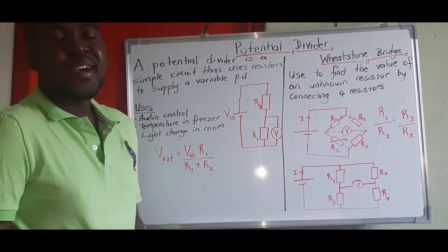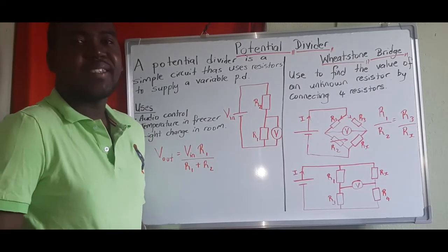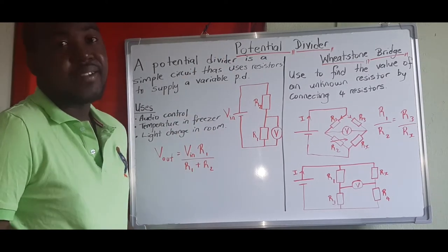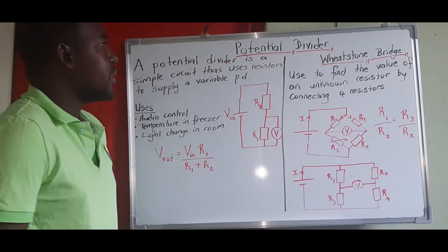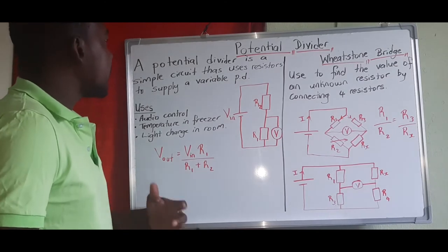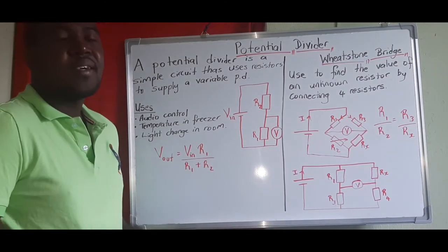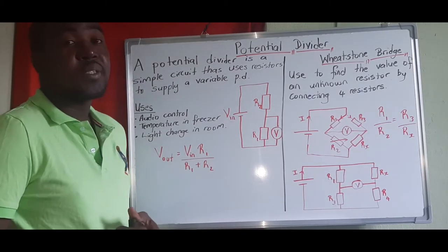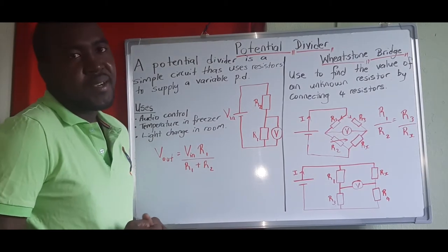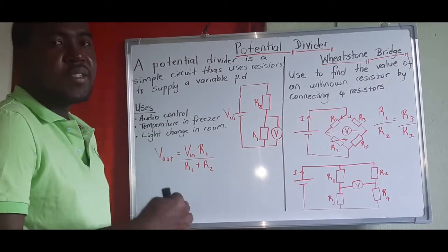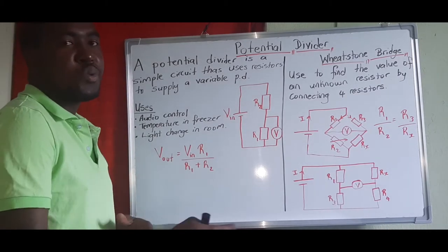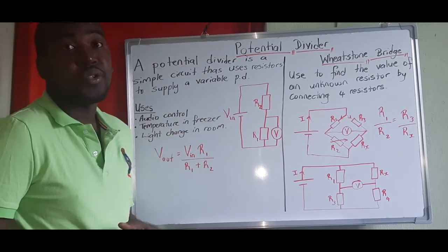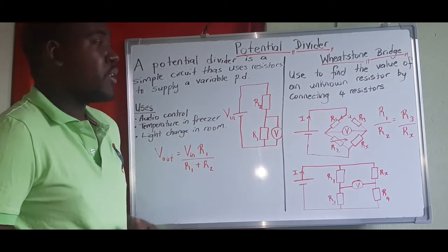Welcome to our next lesson. Today we're looking at potential dividers. Potential dividers are simple circuits that contain resistors used for the purpose of splitting voltage. Based on the position that you want your output voltage to be, it depends on the value of the resistors that you use in your circuit.